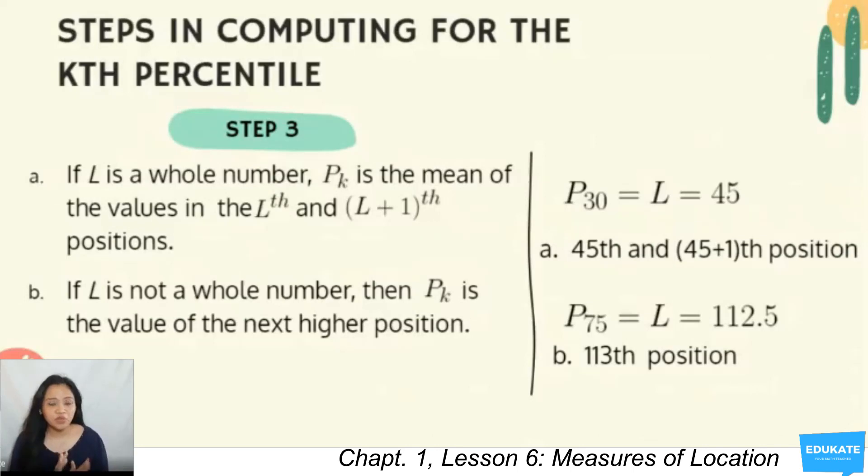For example, if you have P30, we have computed its location to be the 45th data. So, we're going to look for the 45th and 45th plus 1 position, which is 46. We are going to get the averages. If it's not a whole number, as we have computed before, P75 has a location of 112.5. We are going to look at the 113th position, round it up to the next whole number.